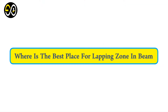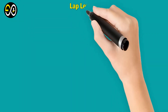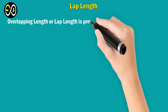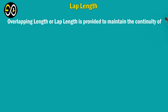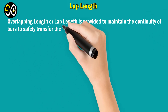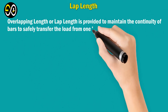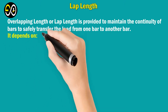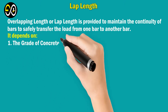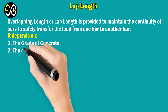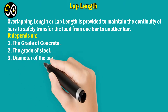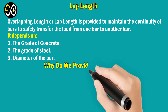Where is the best place for lapping zone in a beam? Lap length, or overlapping length, is provided to maintain the continuity of bars and to safely transfer the load from one bar to another. It depends on three factors: one, the grade of concrete; two, the grade of steel; and three, the diameter of the bar.